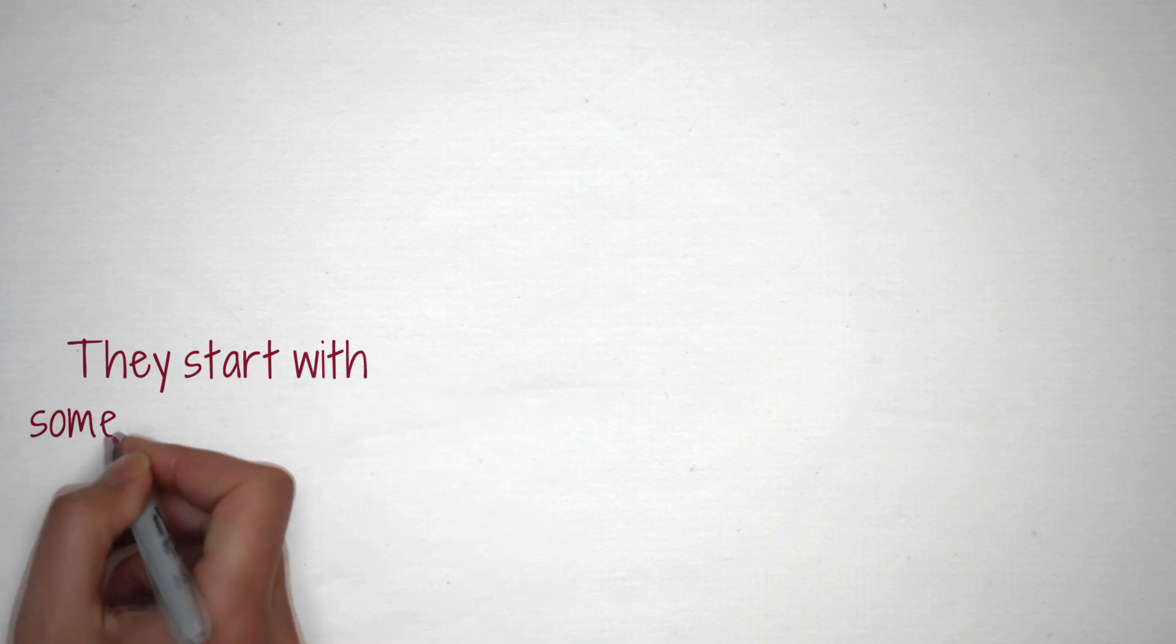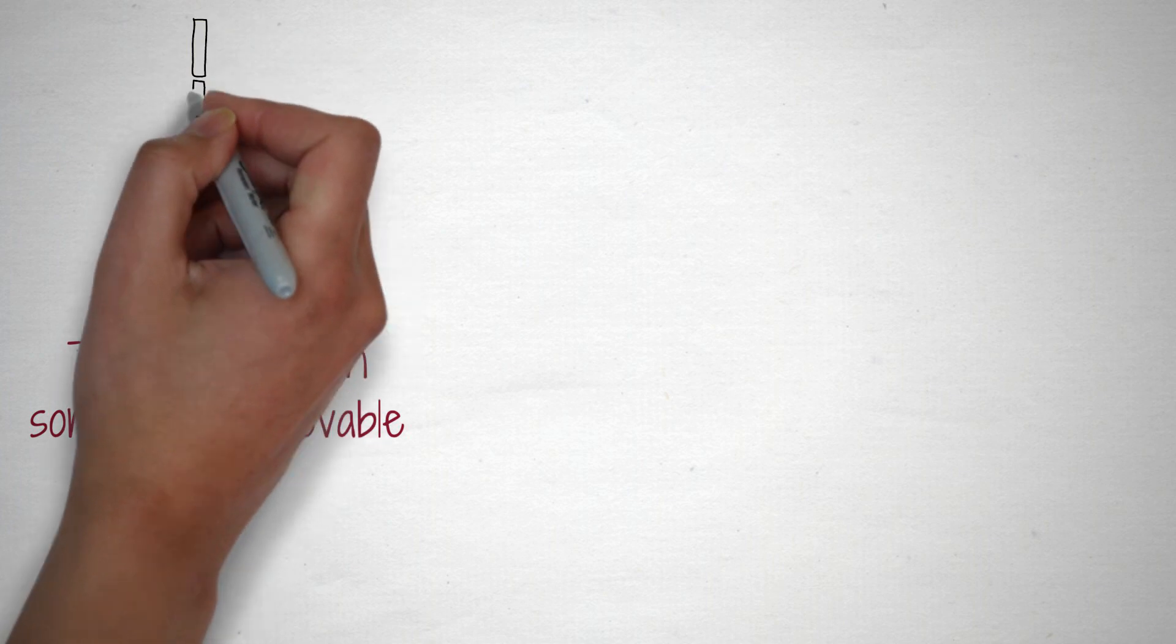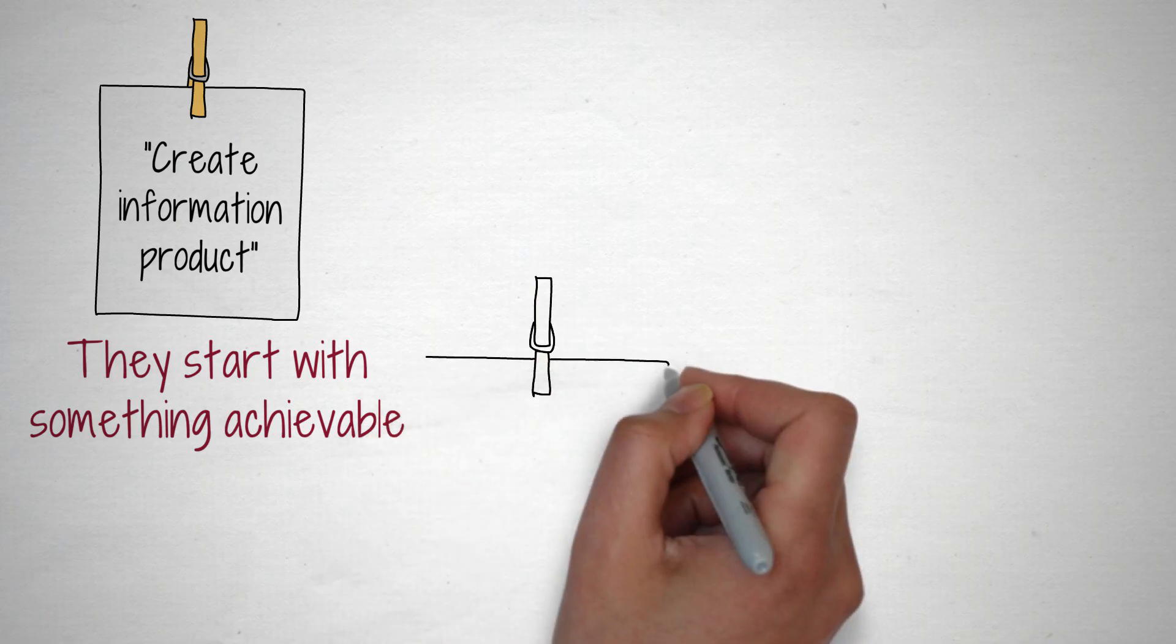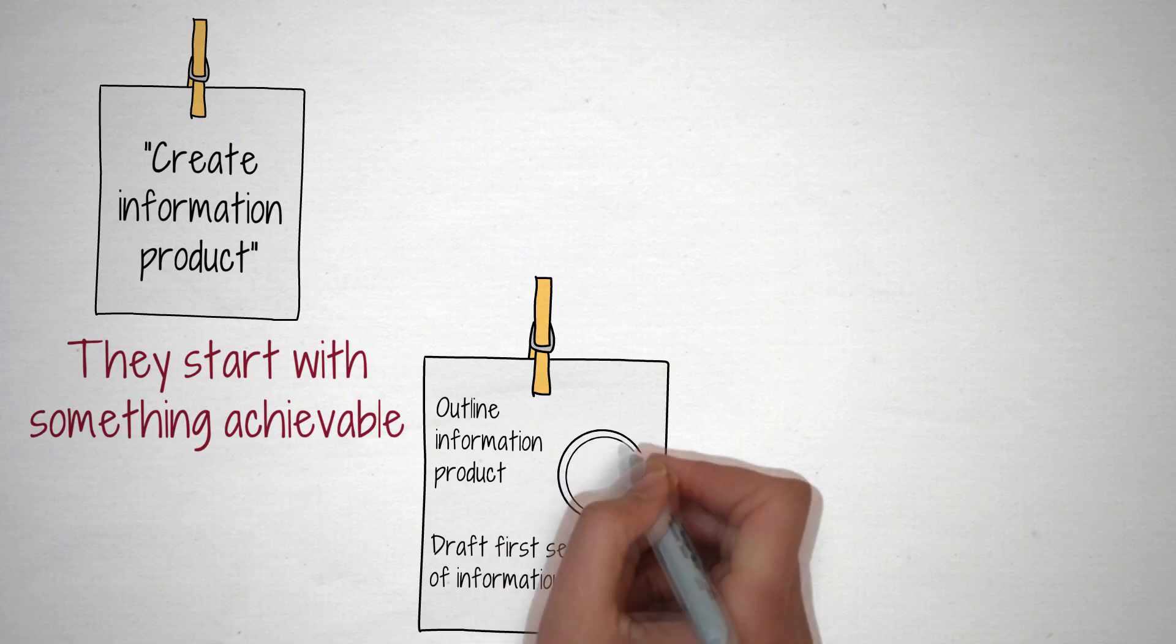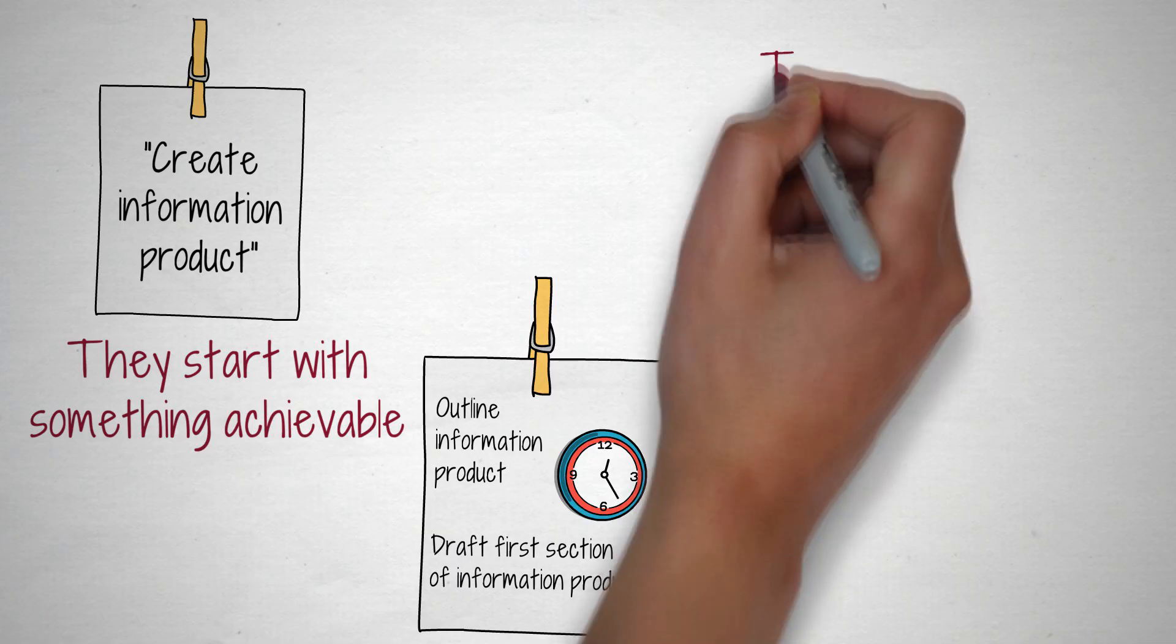Productive people don't procrastinate. Here's what they do instead. They start with something achievable. Sometimes we procrastinate because the task seems too large to manage. If you have something like Create Information Product on your to-do list, that's daunting. You need to break that process up into smaller steps. The first one could be Outline Information Product or Draft First Section of Information Product. Don't forget to put a time estimate next to each one.